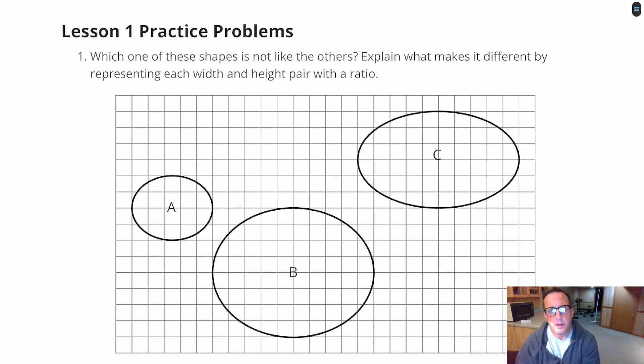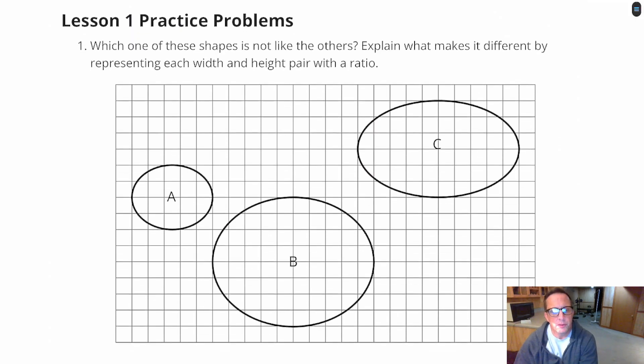Alright, on to lesson one. This is unit two, lesson one, the practice problems. Number one says, which one of these shapes is not like the others? Explain what makes it different by representing each width and height pair with a ratio.